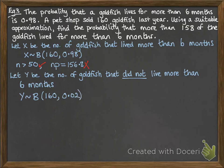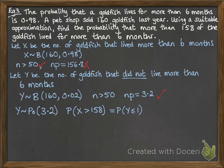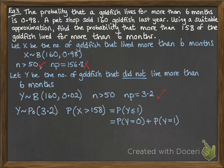We let y be the number of goldfish that did not live more than 6 months. Y follows a binomial distribution with 160 trials, and the probability of success (not living more than 6 months) is 0.02, which is 1 minus 0.98. Now n is bigger than 50 and np is less than 5, so this works for a Poisson approximation. Y can be approximated with a Poisson distribution with parameter 3.2. The probability that x is greater than 158 is the same as the probability that y is less than or equal to 1 — meaning either none or 1 died — which equals the probability that y equals 0 plus the probability that y equals 1.